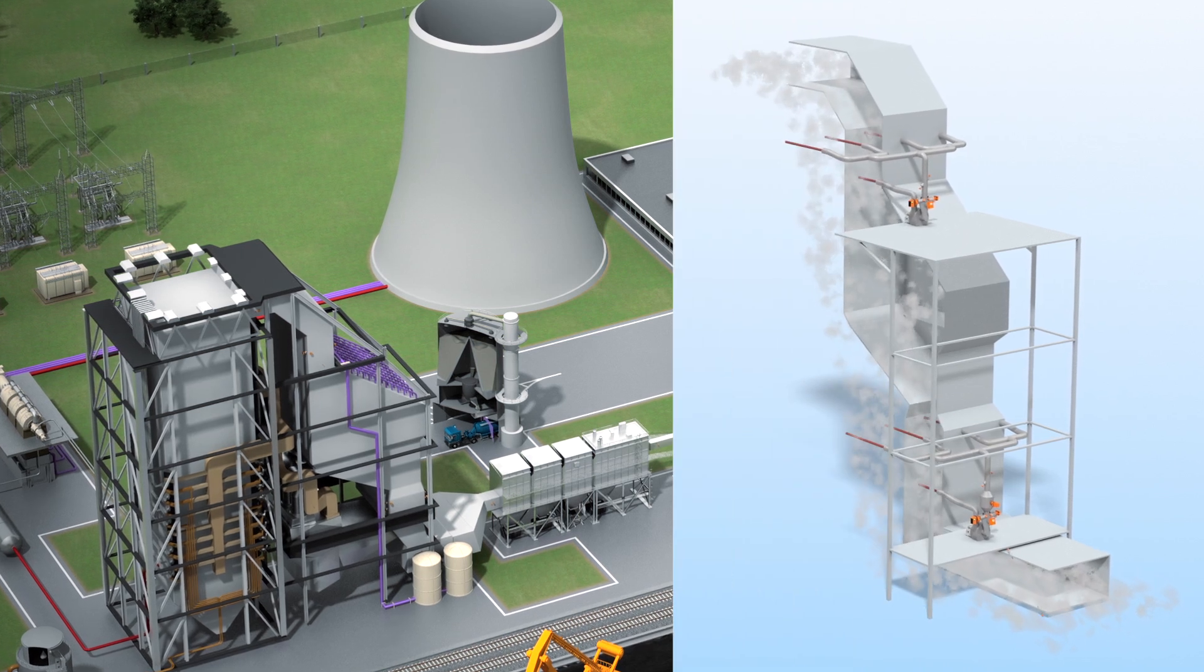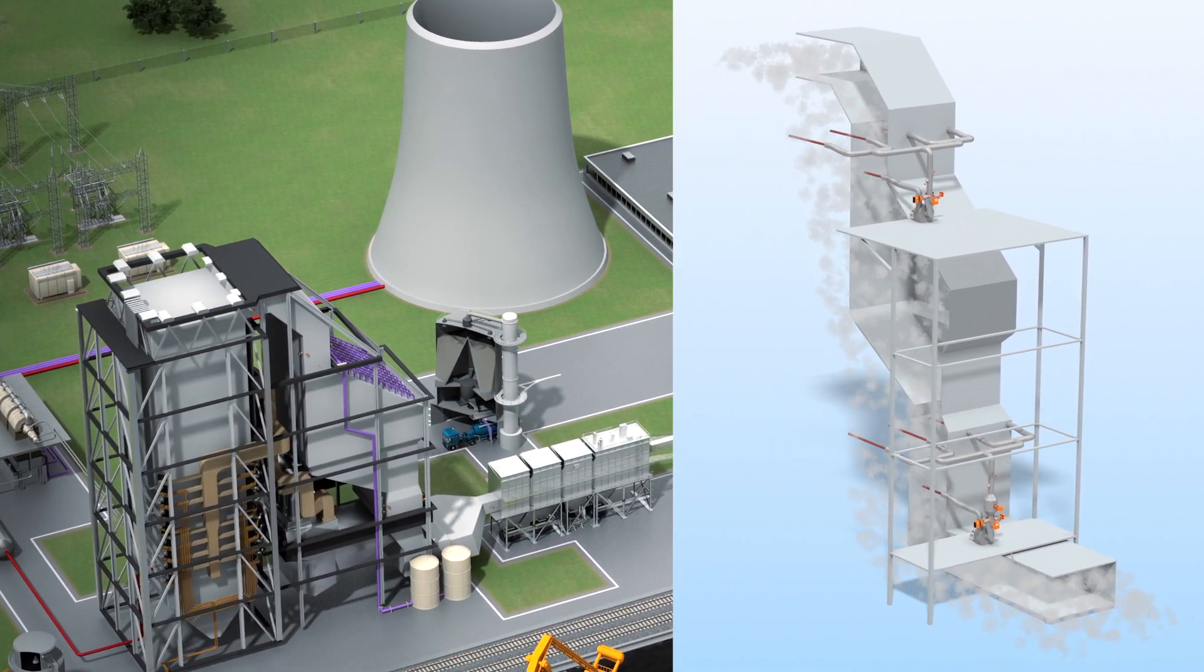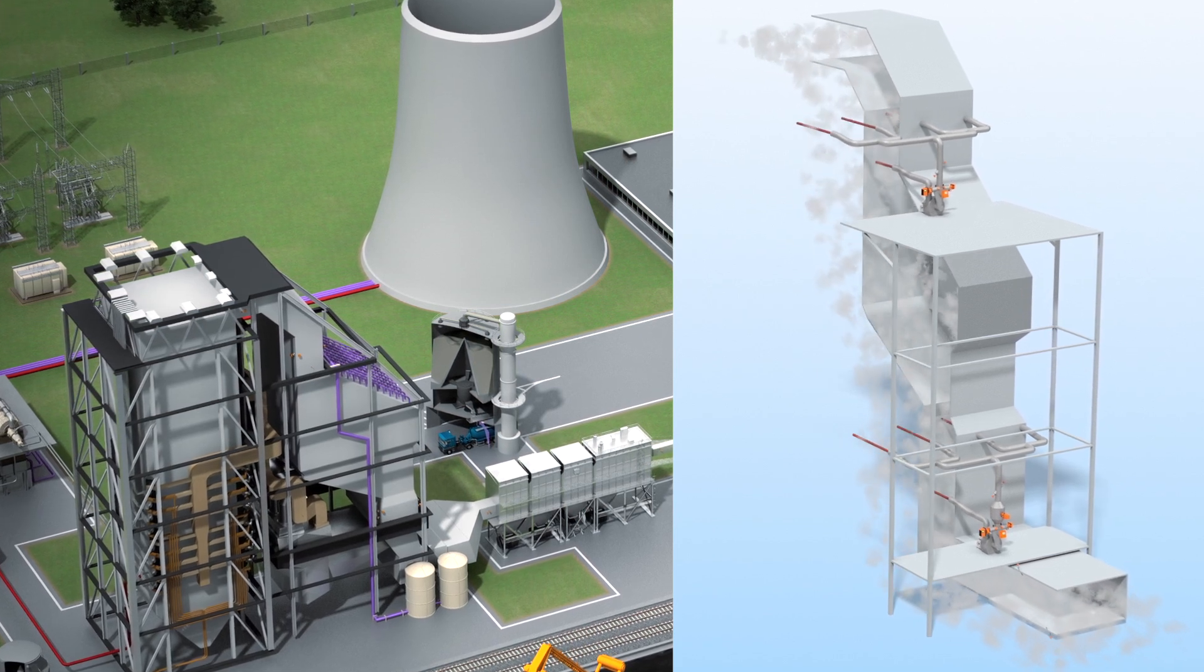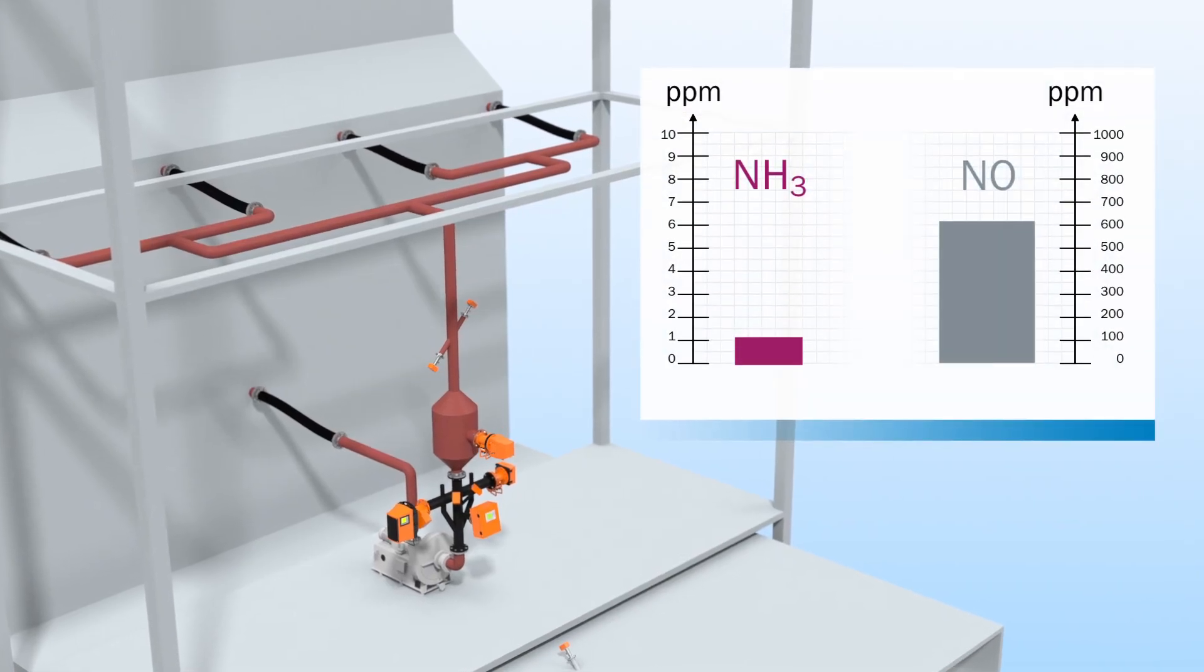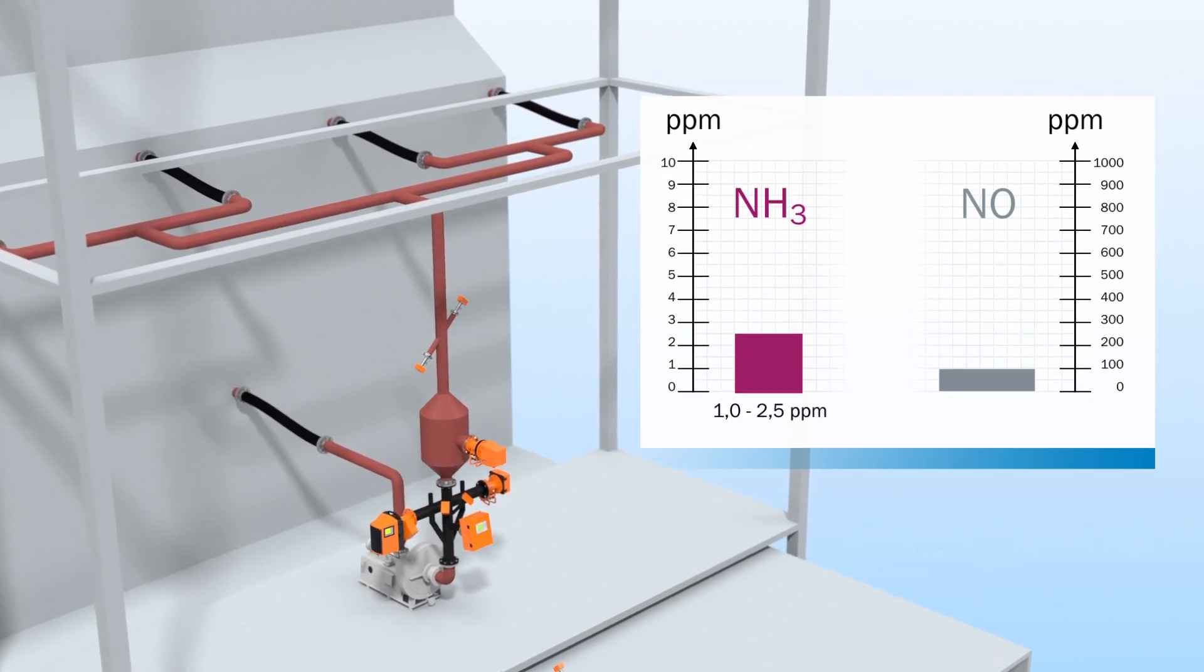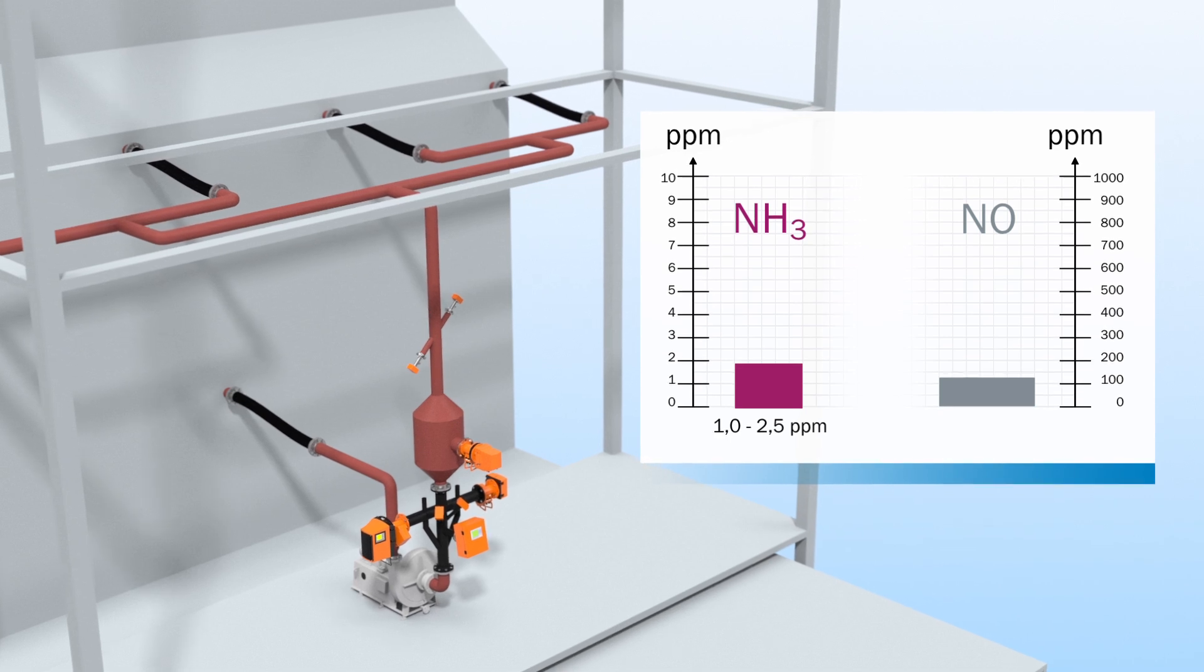The gas mixture is also measured after the SCR in order to check the effectiveness of the catalyst and provide feedback control. If any NOx is still present, ammonia injection is increased. If the ammonia level is too high, injection is reduced.